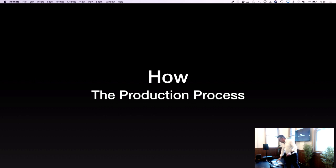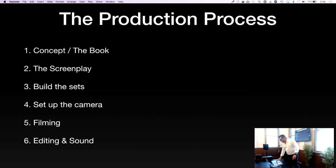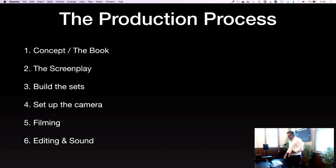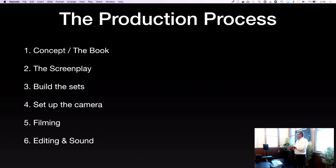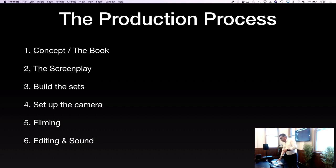How — the production process. There are six easy points. Taking a movie metaphor: first is the concept, like you've got the concept of the book — that's pretty much your app, what it does, the features. Then you build a screenplay, build the sets, set up the camera, do the filming, editing, and sound. The concept is the feature — that's what you want to show in your application.